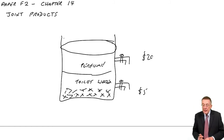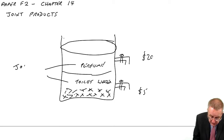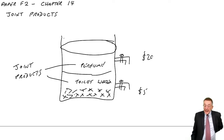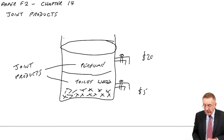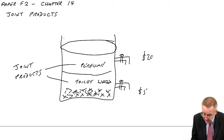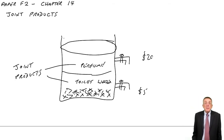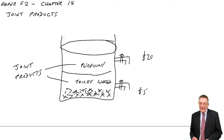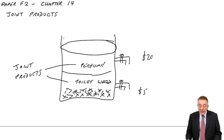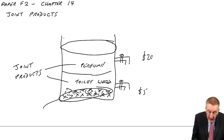We've got two separate products but they're being made together, and the costs are shared between them. We call these joint products. Joint products is when you're making two or more products in the same process and you can't identify the costs of one versus the other. Once we've taken out all the perfume and toilet water, we're left with all the dead flowers. Maybe we just throw them away, but maybe a farmer will buy them to feed his animals.